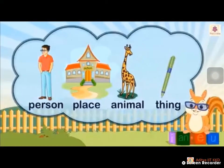Person, place, animal, thing — we did not specify who they are. So we are speaking in a common way. Those names come under common nouns.